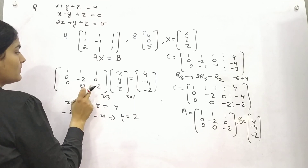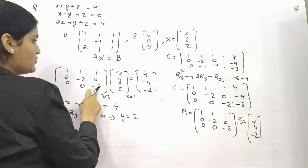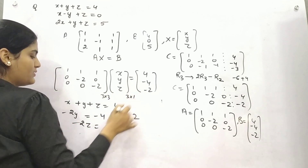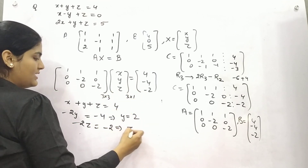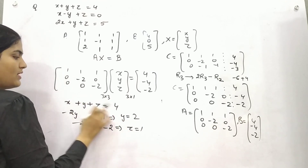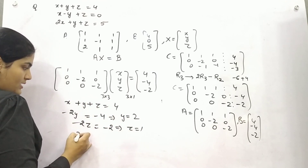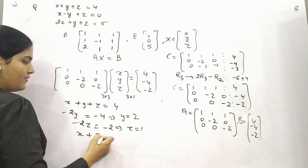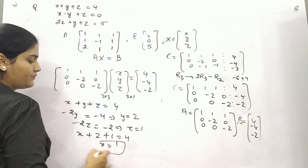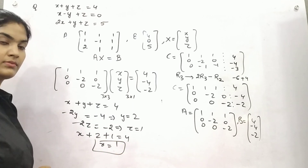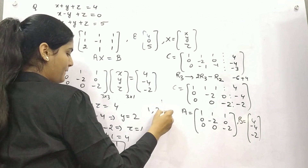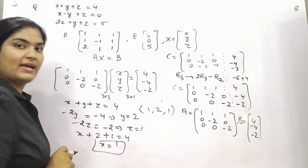So your solutions are: Z equals 1, Y equals 2, and substituting back, X equals 1. These are the final values of X, Y, and Z.